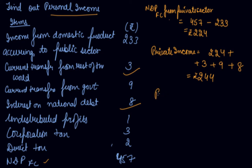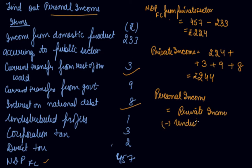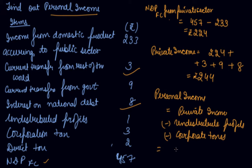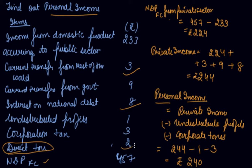From private income you derive personal income: private income minus undistributed profit minus corporate taxes. Private income is 244; undistributed profit is 1; corporate taxes is 3. So personal income is 240 rupees. If you need to calculate personal disposable income, you subtract direct taxes from personal income — direct taxes are not included up to the personal income stage, only deducted after. So personal disposable income is 238 rupees.